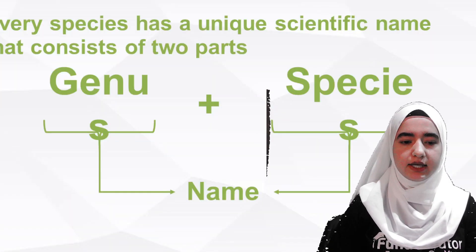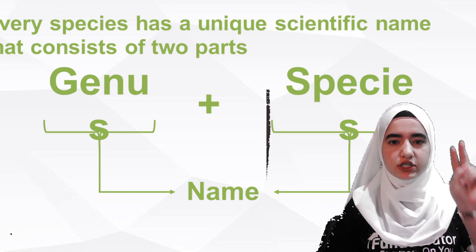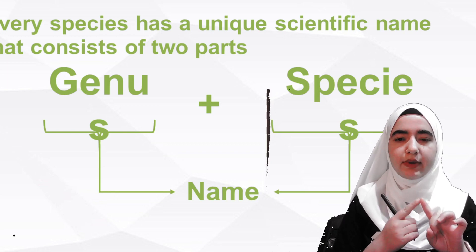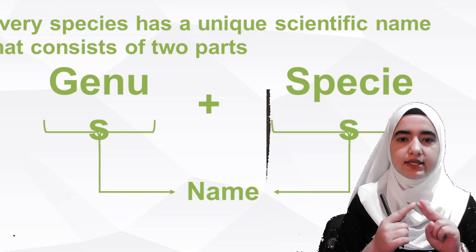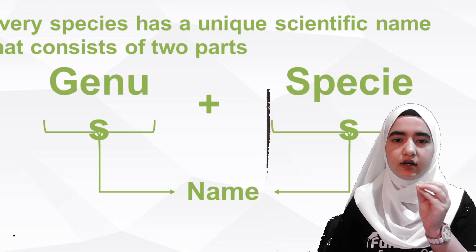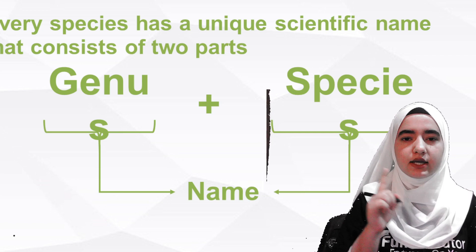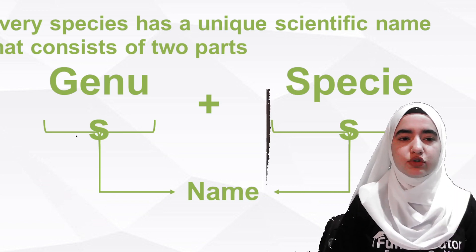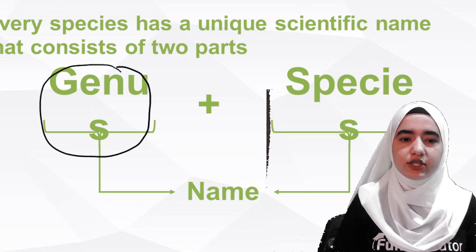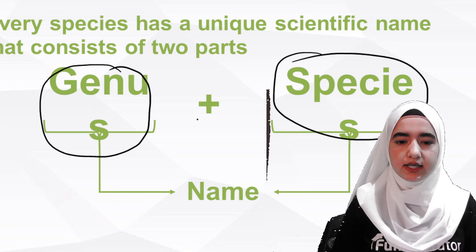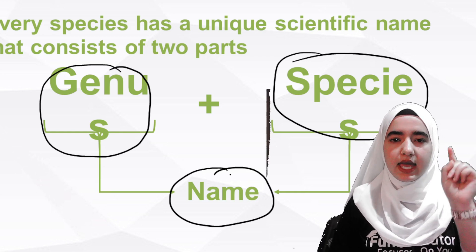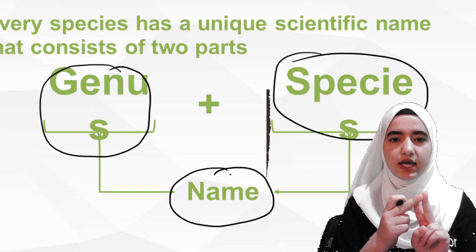Binomial nomenclature simply means we have two terms. One is the genus and the second one is species, also called specific epithet. These two terms together form the scientific name of an organism.